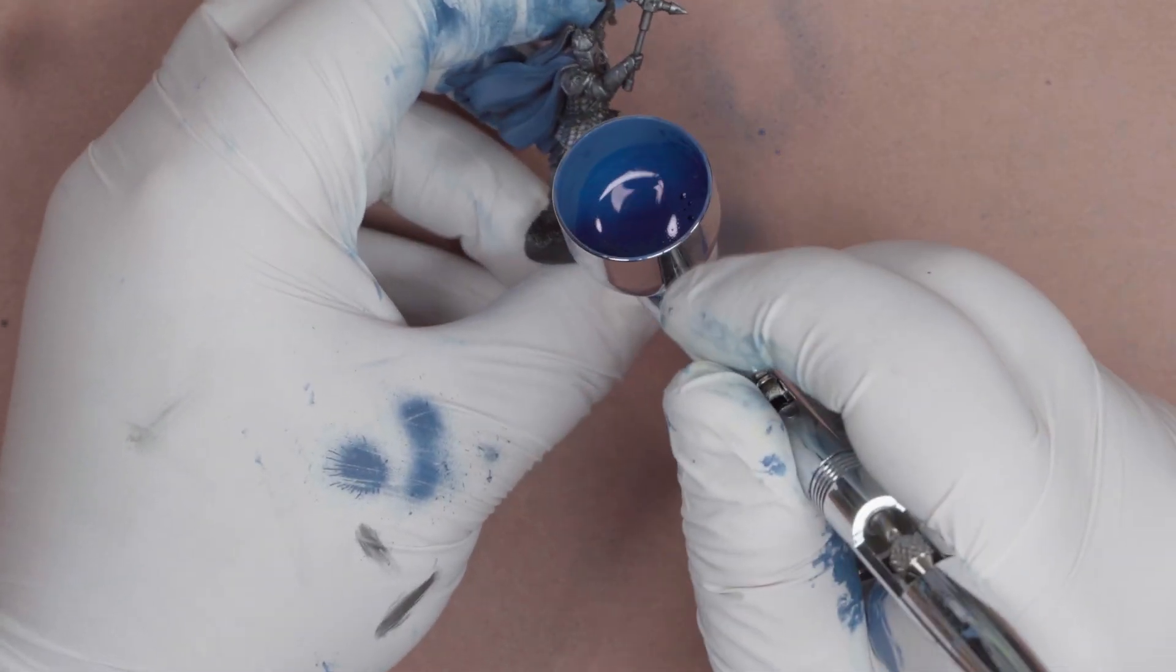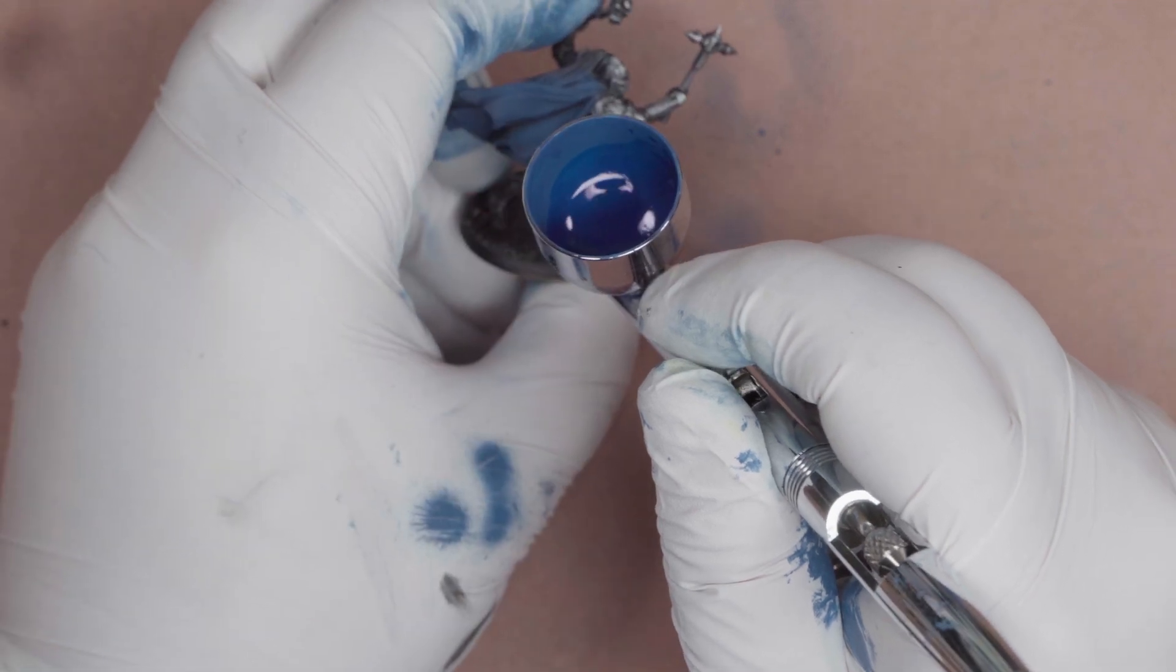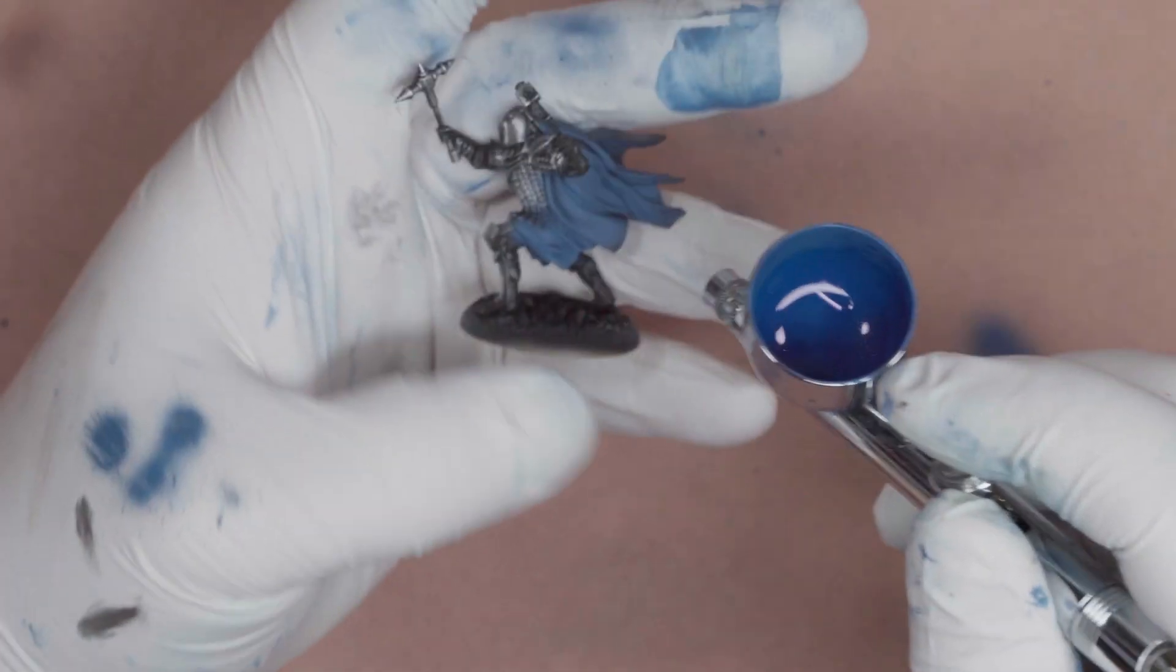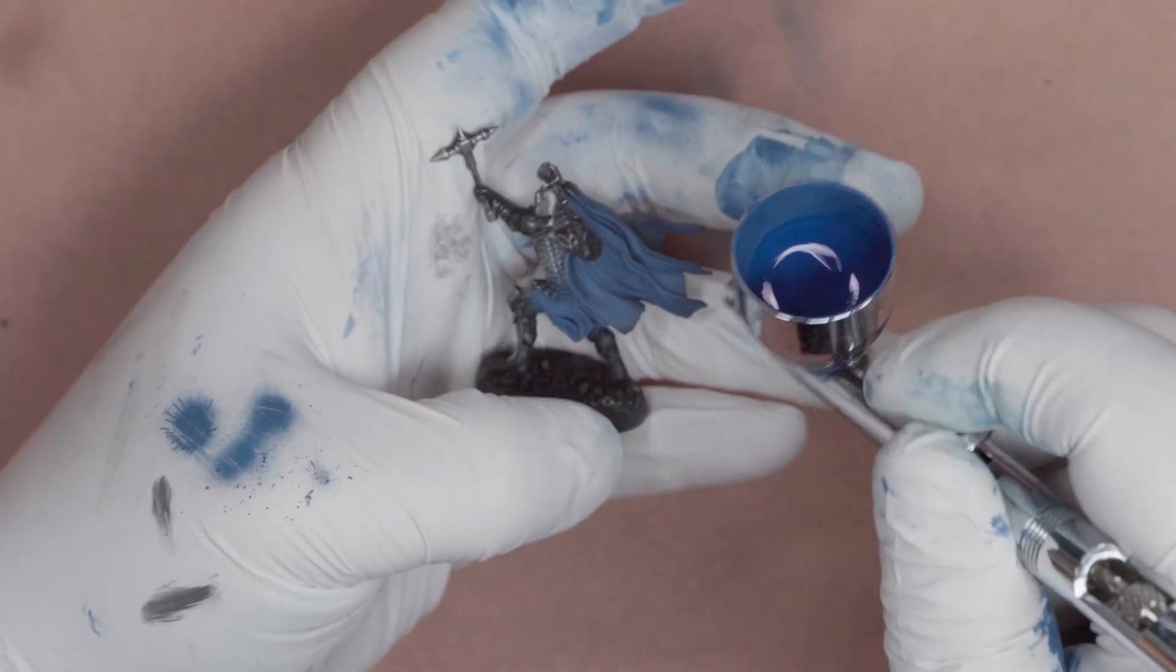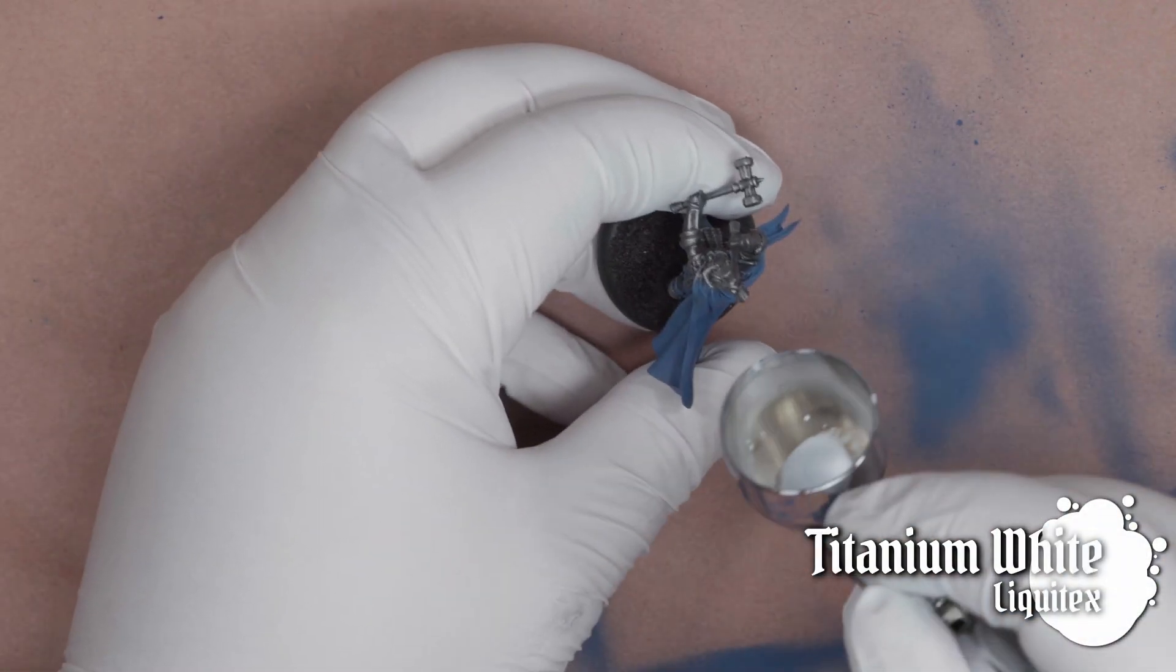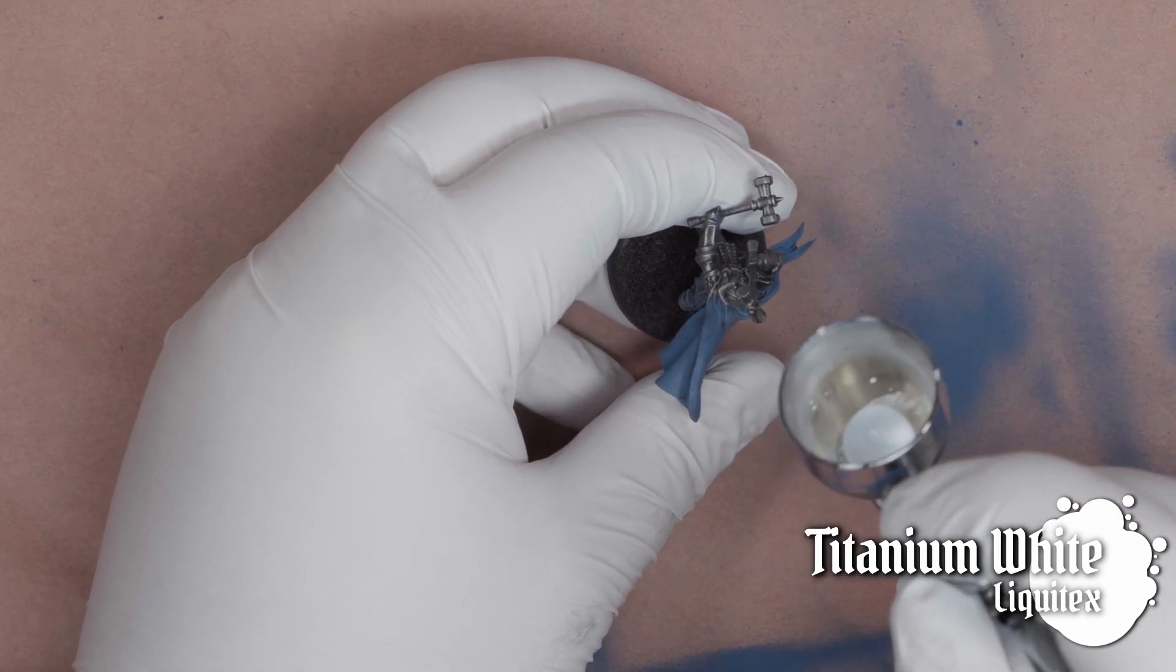But Craig, you're asking, why would you do it in this order? Why not just zenithal the entire model and then go from there? Well, my imaginary interlocutor, I have an answer for that. In fact, you've already heard it. It's because we wanted to make sure the model was primed black for the metallics. There's a little more to it than that, but essentially that's why we're going about it in this fashion.